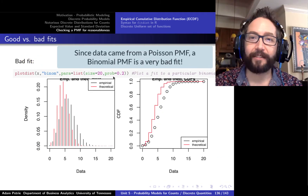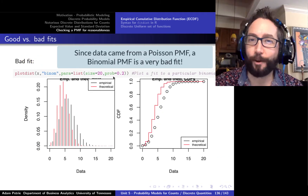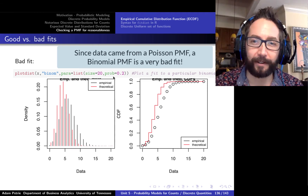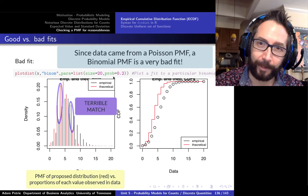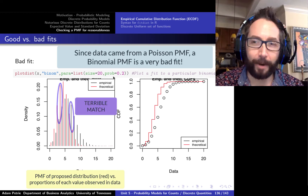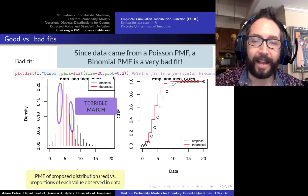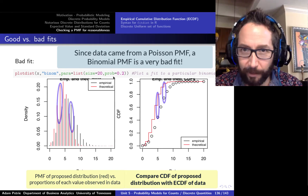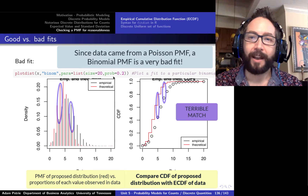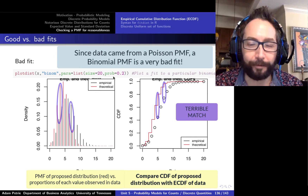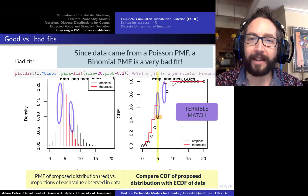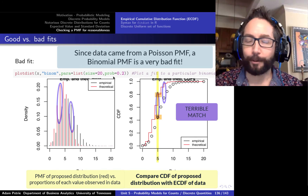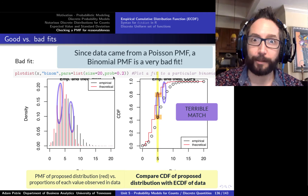A bad fit would look like this: if we instead fit the data to a binomial distribution when we know it's coming from a Poisson, we see a very severe mismatch between the empirical frequencies and the theoretical probabilities. Comparing the ECDF to the CDF on the right, those points don't fall anywhere close to the outer edges of the stairs — we're not getting a good match between the actual fraction of data values that are 5 or less and the probability of observing a value of 5 or less with this binomial model. Bad match, not a reasonable fit.